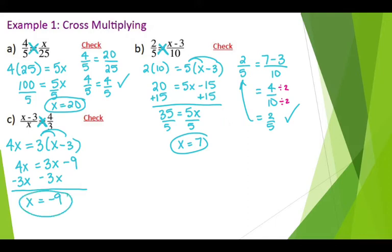Let's double check this. So I have negative 9 minus 3 over negative 9, and I want to see if that equals 4 thirds. So negative 9 minus 3 is negative 12 over negative 9. Both of those are divisible by 3, so I'm going to go ahead and divide both of those by 3. I also know that a negative divided by a negative is going to be a positive. So this is going to end up being a positive 4 thirds, which is exactly what we had over there.